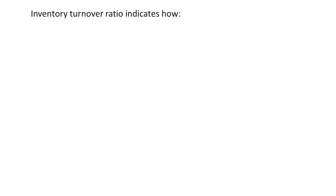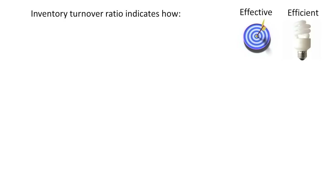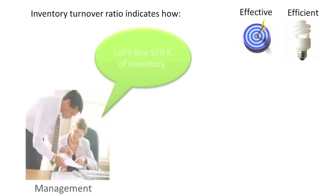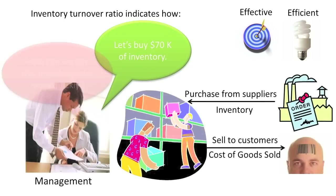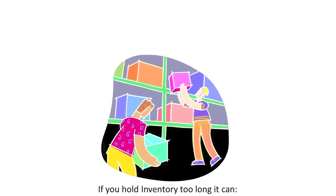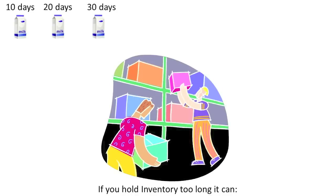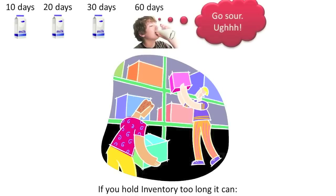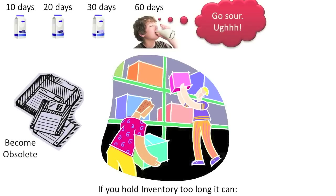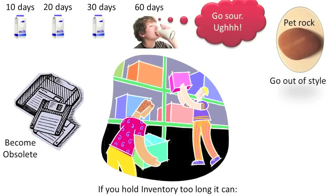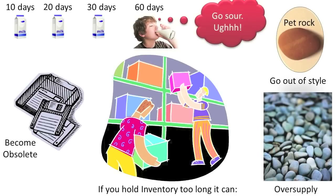The Inventory Turnover Ratio indicates how effective and efficient management is at purchasing inventory from suppliers and selling it to customers. When management holds inventory too long, bad things can happen: milk can go bad, computing technology can become obsolete, fads can pass, and oversupply can result.